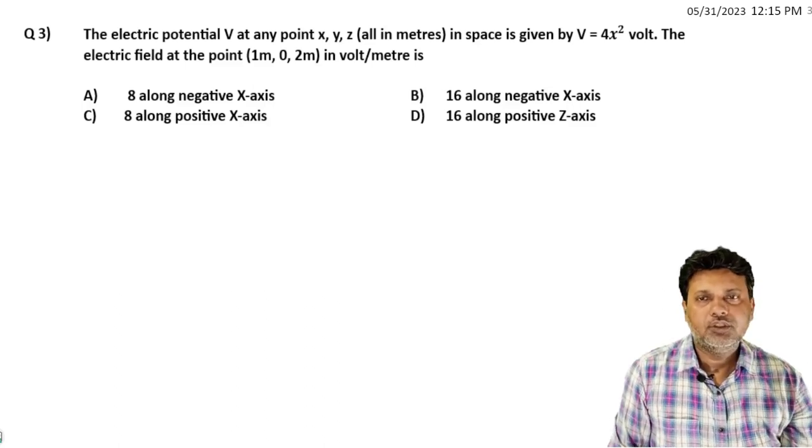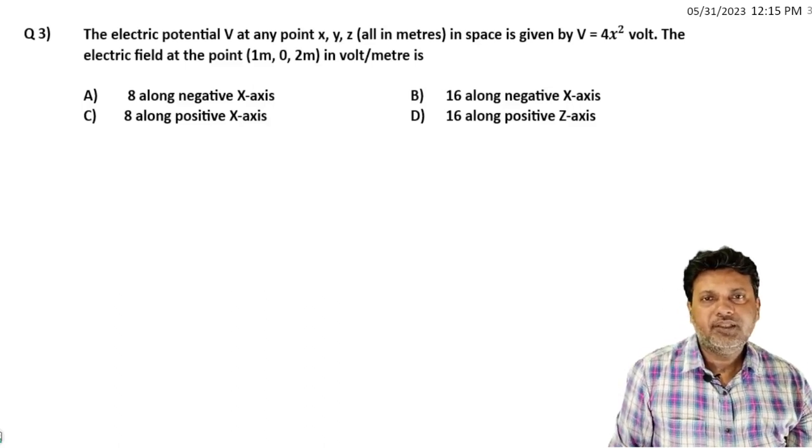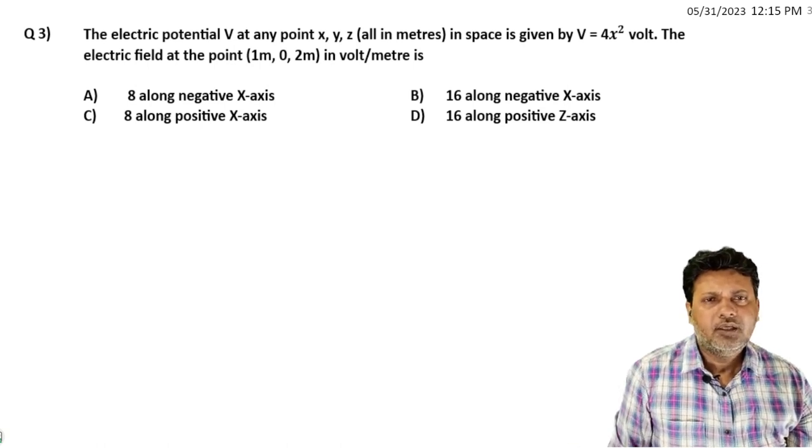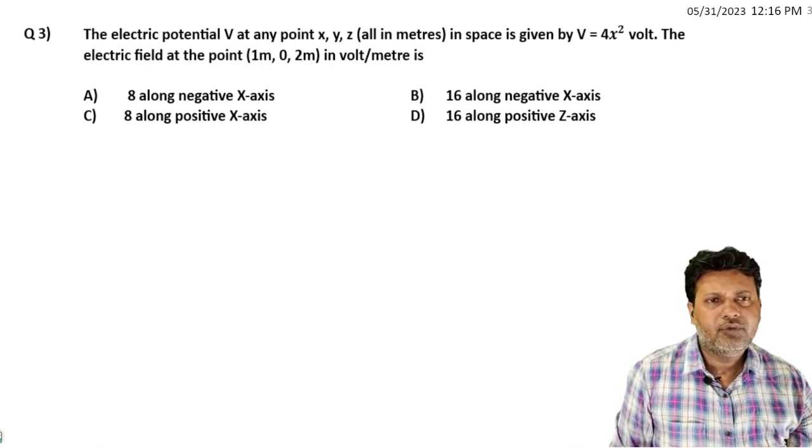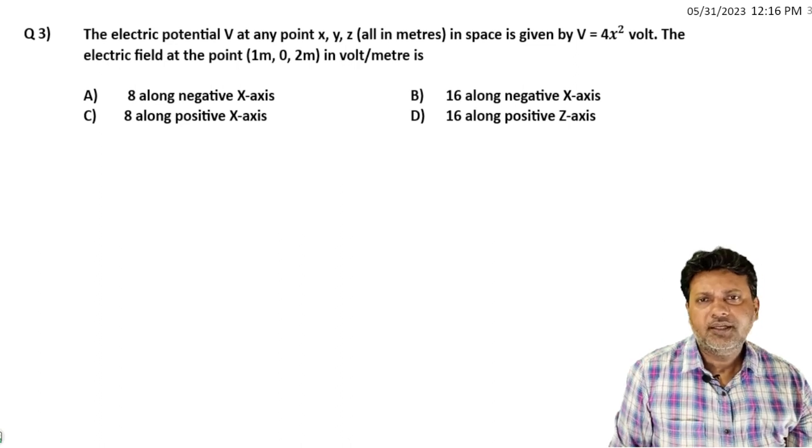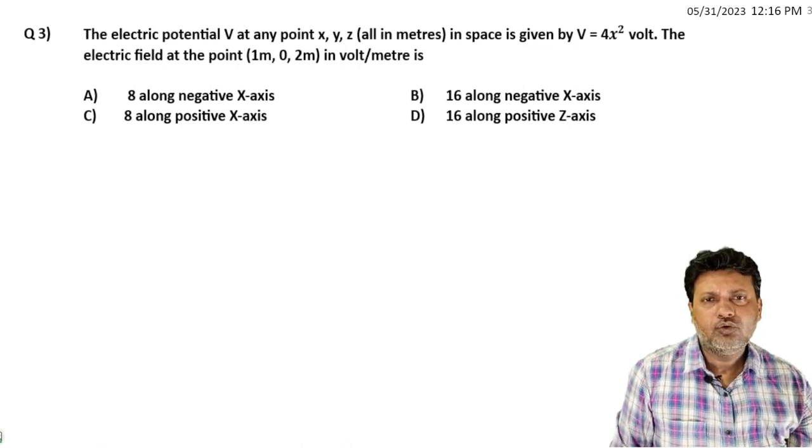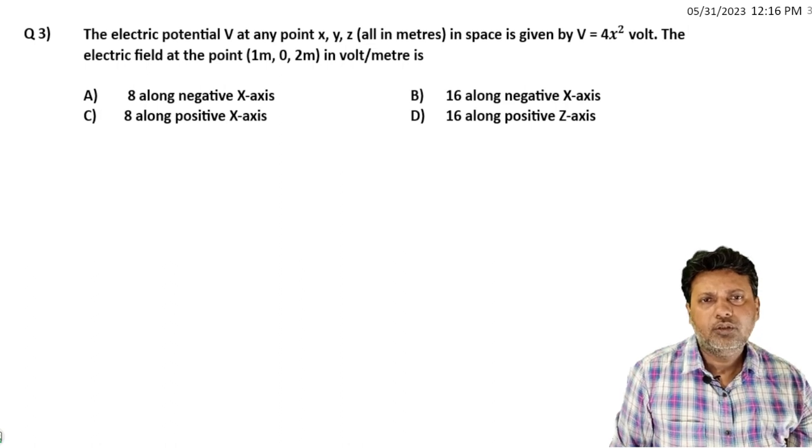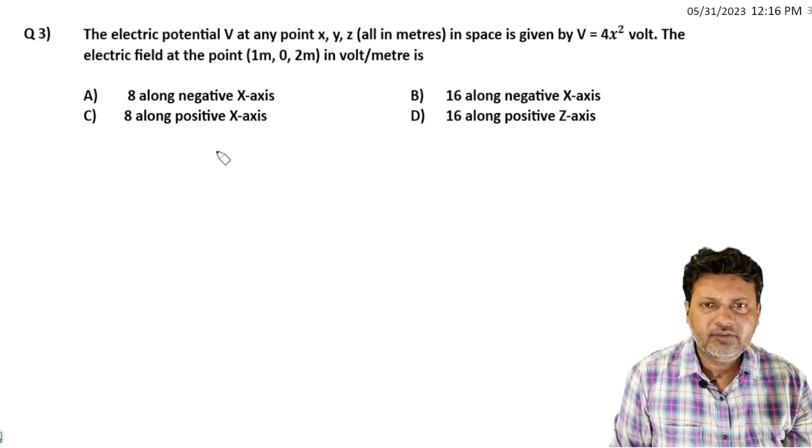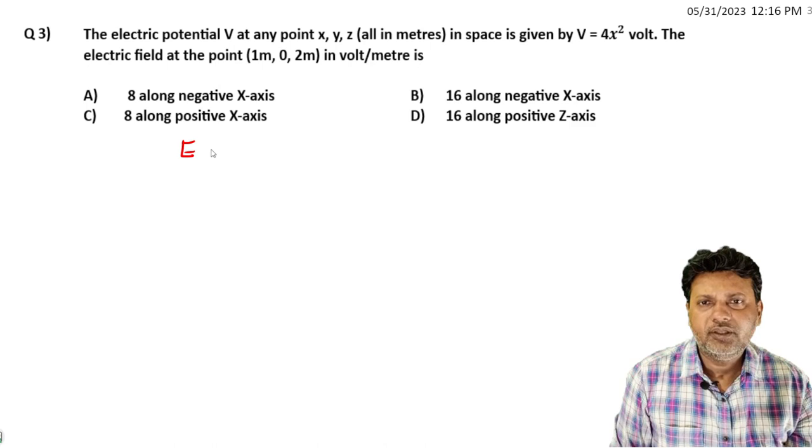Chalo, next question. The electric potential at any point XYZ, all in meters in space, is given by V is equal to 4X² volt. The electric field at the point (1, 0, 2) in volt per meter. The electric field, the formula kya hota, electric field is equal to kya hota minus dV by dx.